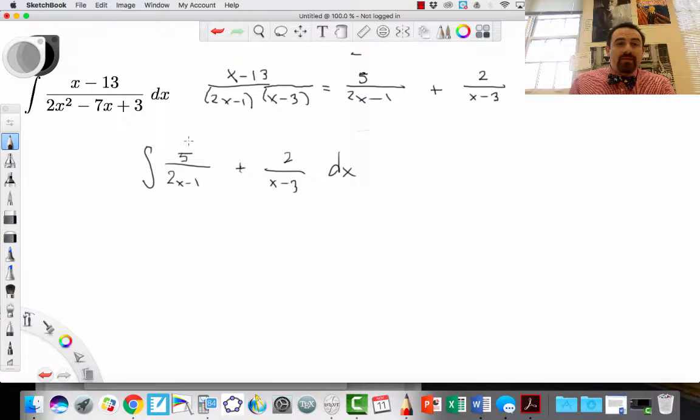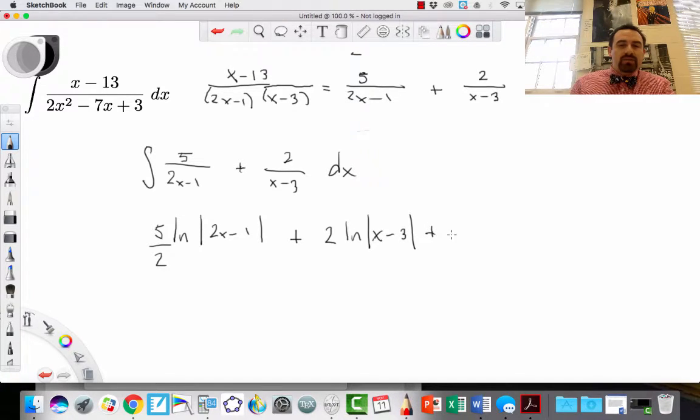Now, this isn't so bad because this is basically a version of ln x. So this is going to be ln of the absolute value of 2x minus 1. But the chain rule says that I have to divide by 2. This is going to be 5 divided by 2. So the u substitution would yield that. And over here, we have a 2. And we're going to have ln of the absolute value of x minus 3. And since x minus 3's derivative is just 1, I don't have to worry about a chain rule affecting the outcome here, plus c.